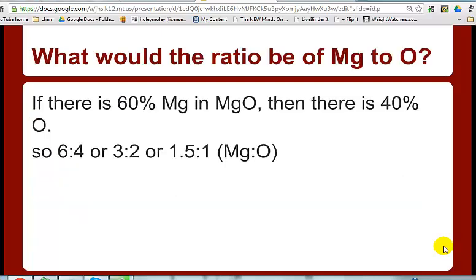And likewise then, if you have 60% magnesium, then you would have 40% oxygen. So the ratio, if we wanted to then find the ratio of magnesium to oxygen, it'd be a 6 to 4 ratio, we can reduce that to 3 to 2 ratio, we could reduce that to 1 and a half to 1. There'd be 1 and a half times more mass of magnesium than there would be of the oxygen. And that's the law of definite proportions.